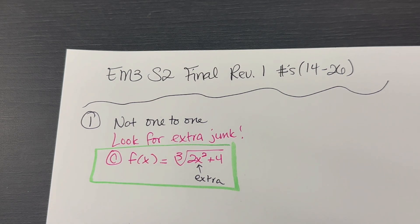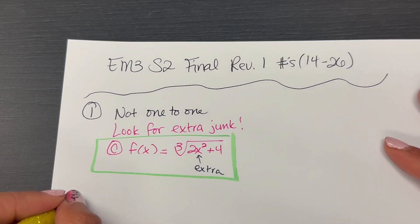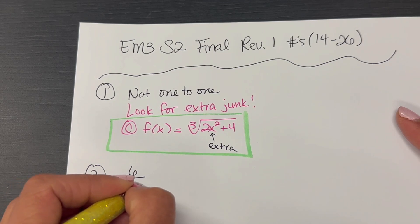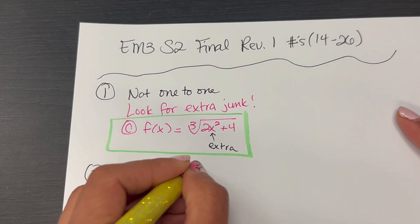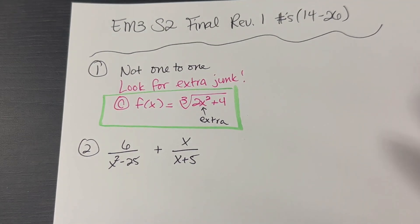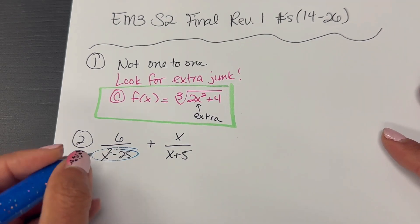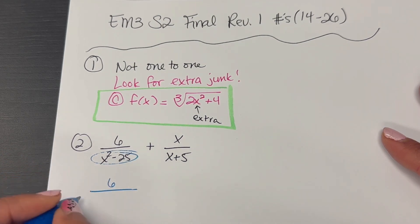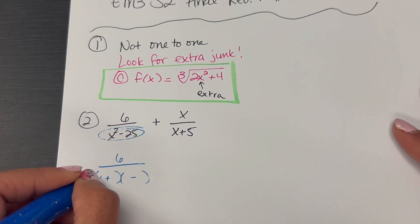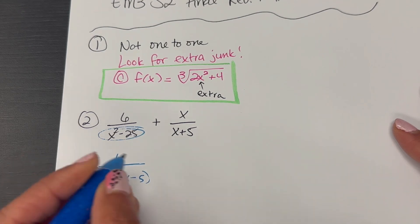Number 2. I've got 6 over X squared minus 25, plus X over X plus 5, and we need to add these fractions and simplify them. So we need a common denominator, which means I need to factor this denominator. X squared minus 25 factors down to two binomial factors — it's a difference of two perfect squares — so X plus 5, X minus 5.